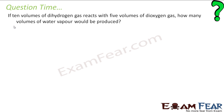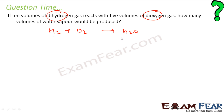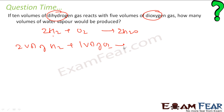If 10 volumes of hydrogen reacts with 5 volumes of oxygen, how many volumes of water are produced? The balanced equation is: 2H2 + O2 → 2H2O, so 2 volumes of hydrogen plus 1 volume of oxygen gives 2 volumes of water.